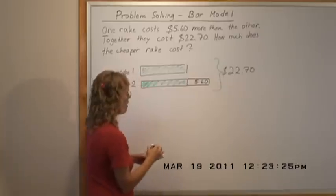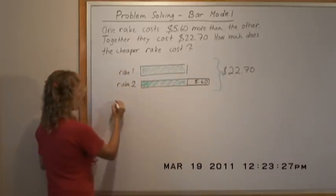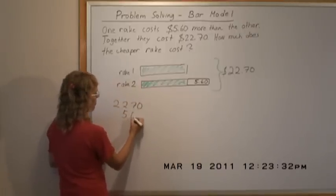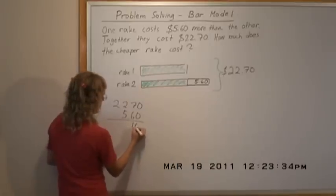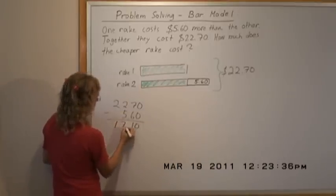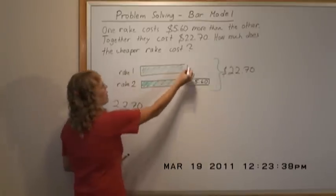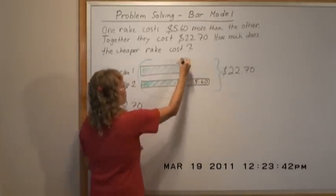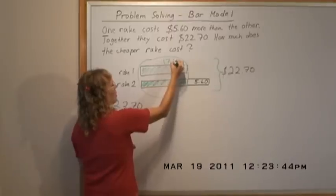You can use mental math or you can write the numbers under each other to get $17.10. These two here are $17.10.